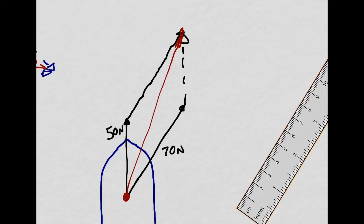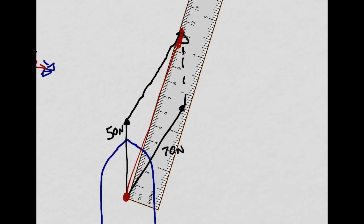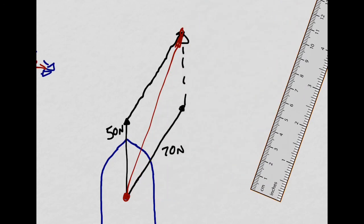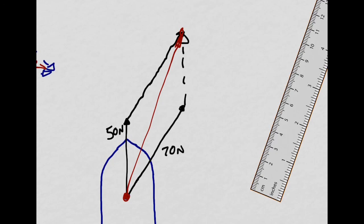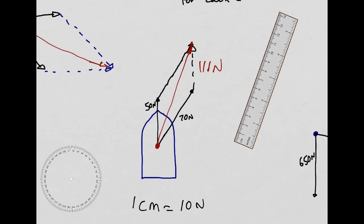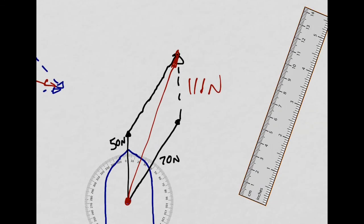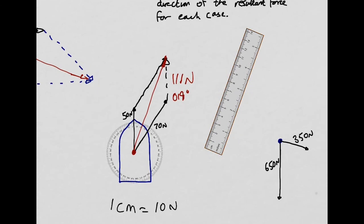Let me measure that with the ruler. It works out to be about 11.1, which with our scale factor gives 111 newtons. Now let me use the protractor to measure the angle — that looks like about 19 degrees, so a bearing of 019 degrees. There's my resultant force.